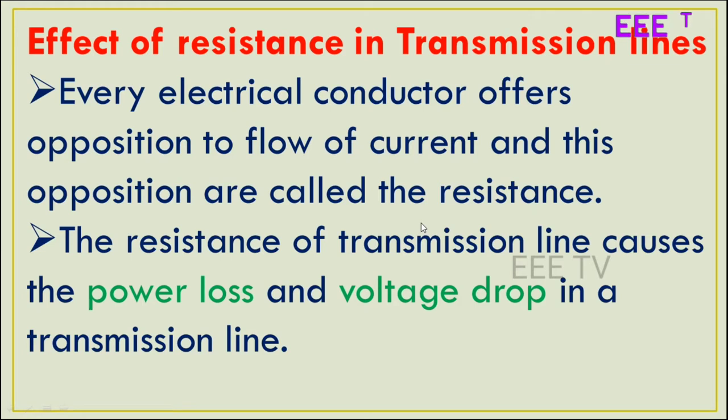Every electrical conductor offers opposition to flow of current, and this opposition is called the resistance. The resistance of transmission line causes the power loss and voltage drop in a transmission line.